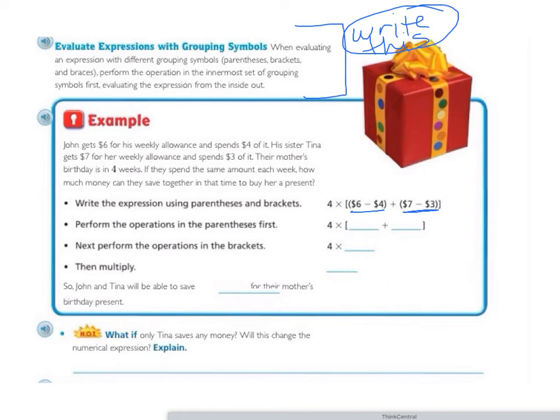We're going to perform the operations in the parentheses first. So 6 minus 4 equals 2, and 7 minus 3 equals 4. Then we perform the operations in the brackets. So first we did the parentheses, now we're doing the brackets. 2 plus 4 equals 6. And then we multiply, so we do the operation on the outside of the brackets. 4 times 6 equals 24. So John and Tina will be able to save $24 for their mother's birthday present.